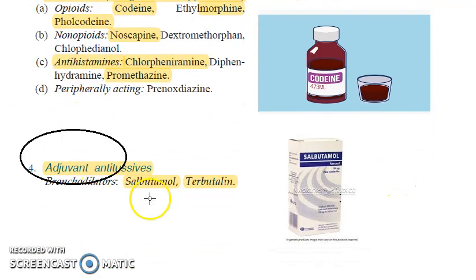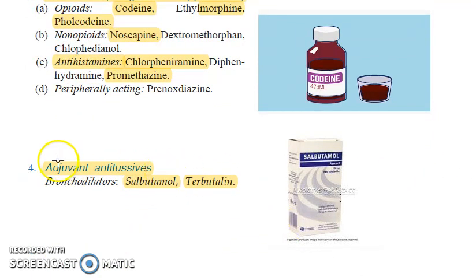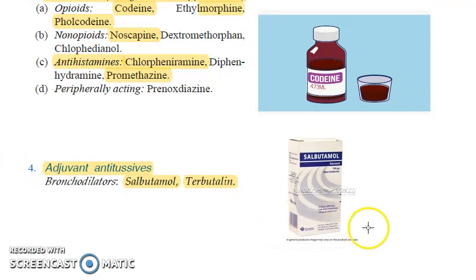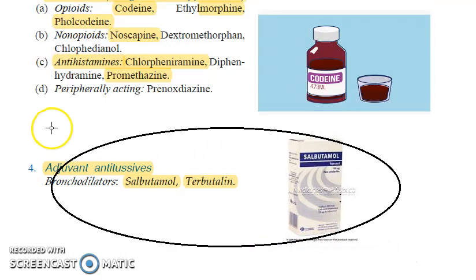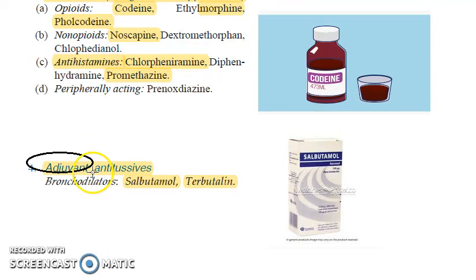And adjuvant antitussives like bronchodilators — salbutamol and terbutalin. These are adjuvant antitussives; they are not purely antitussives but serve as adjuvants.